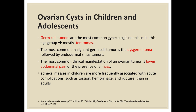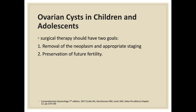Germ cell tumors are the most common gynecologic neoplasm in this age group, usually teratomas or dermoid cysts. The most common malignant germ cell tumor is the germinoma, followed by endodermal sinus tumors. The most common clinical manifestation is lower abdominal pain or the presence of a mass on ultrasound. Adnexal masses in children are more frequently associated with acute complications such as torsion, hemorrhage, and rupture than in adults. Surgical therapy, if needed, should aim for removal of the neoplasm with appropriate staging while preserving future fertility.